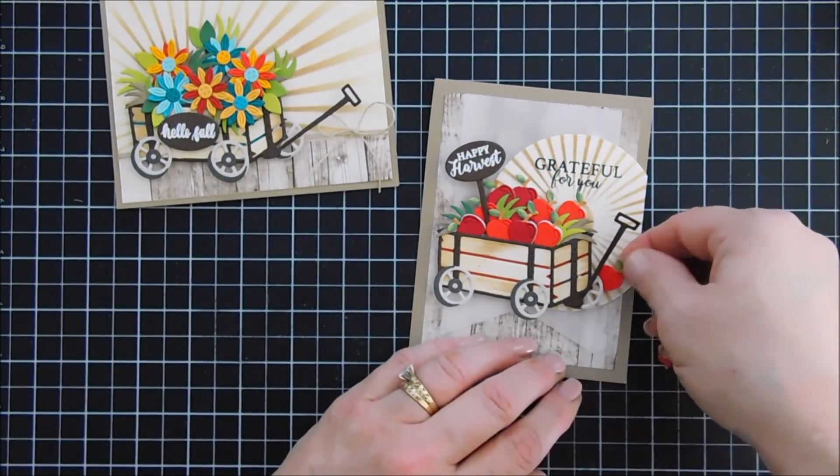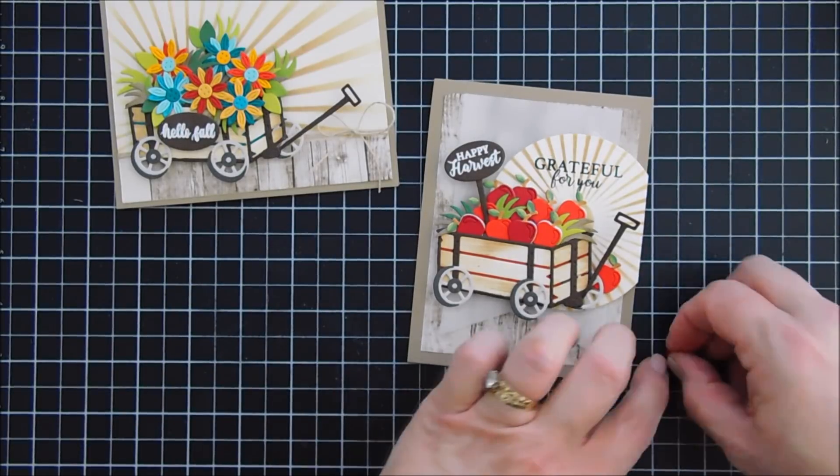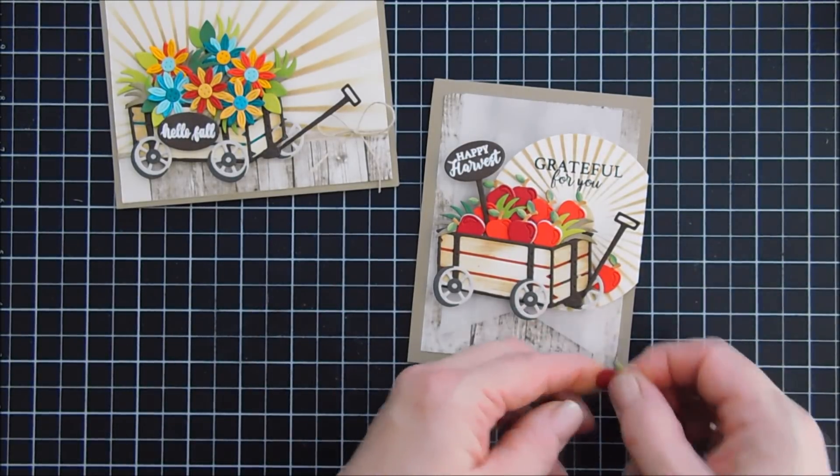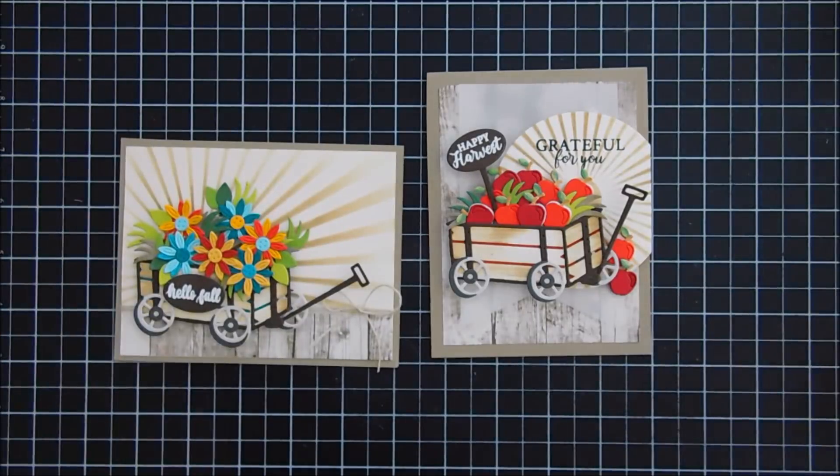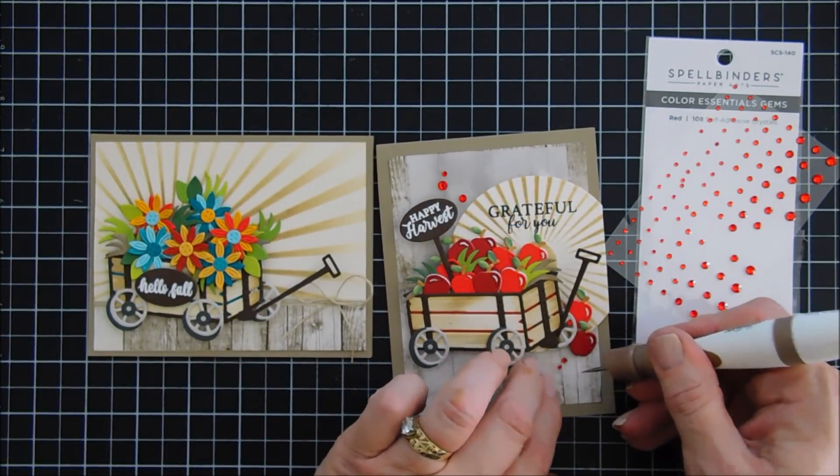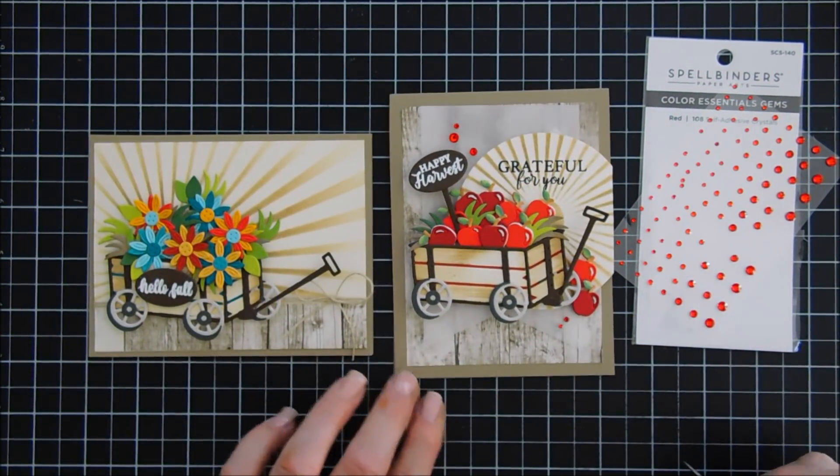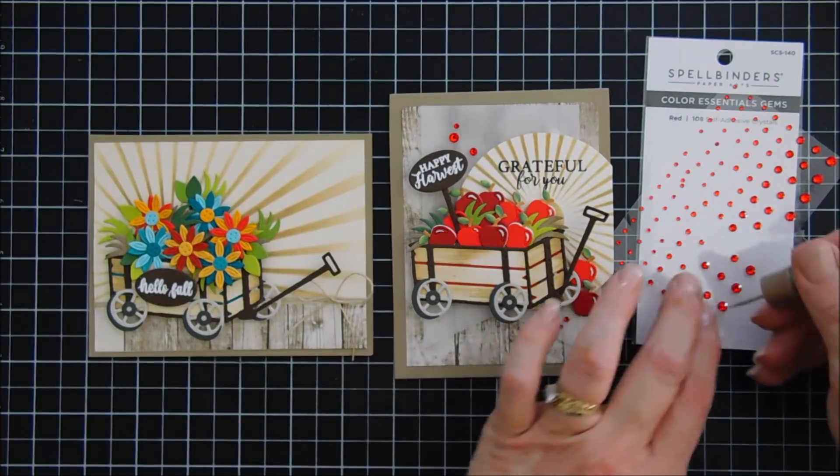We're going to do a little tucking with our leftover apples. I did pop those up with some foam adhesive and I just love how autumn-y this feels. I am going to add a little sparkle with some color essential gems. I'm actually going to use three different kinds. We're going to use red for the apple cart.